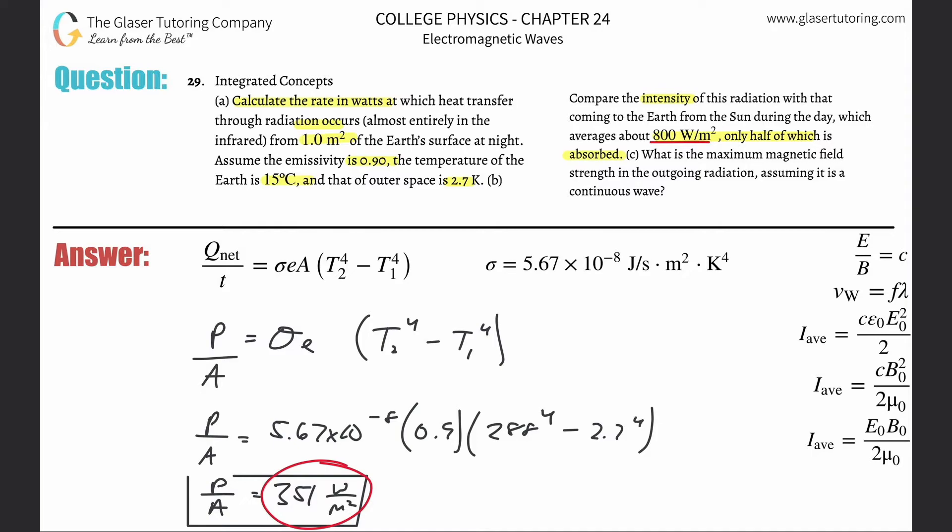What we want to do is calculate the percentage of a half of the total 800, because only half is absorbed. That's simply going to be 351 over 400. Divide that by 400, so that's about 0.878 or so, about 87.8%. That takes care of letter B.